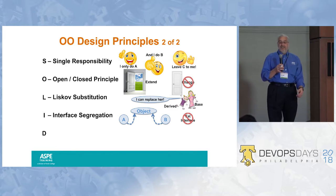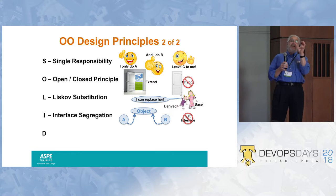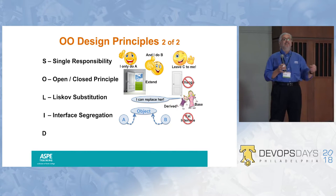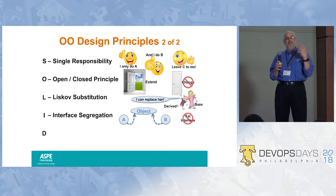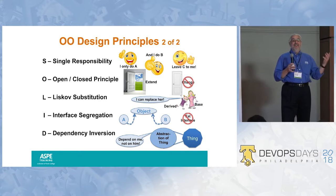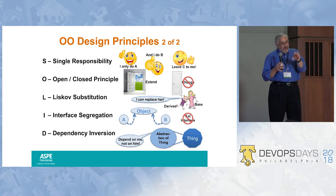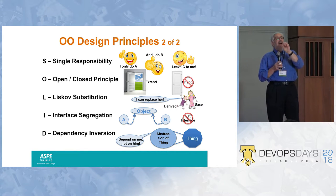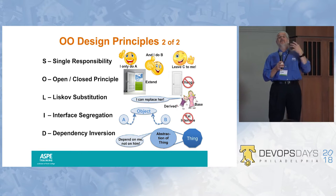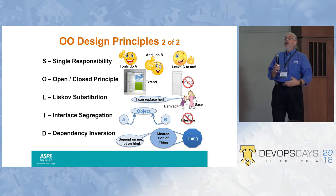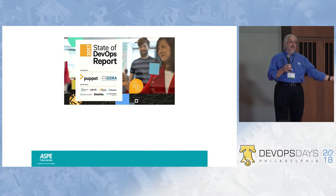I is for interface segregation: we don't want one big fat interface trying to service all the needs — we have different specialized interfaces, simplifying and making sure it's going to work right. And D is for dependency inversion: I don't focus on the thing itself; I have a dependency on an abstraction of that thing, which allows me to make changes to the thing without messing up the other services that are dependent upon it.